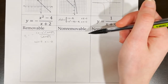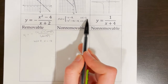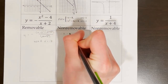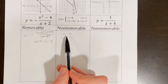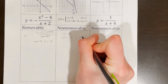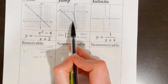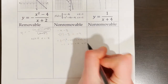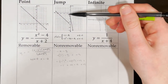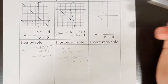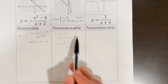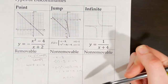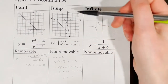For the jump discontinuity, which is non-removable, I'm going to analyze what each piece of the function equals at x equals negative 1. Plugging into the first piece, negative x minus 8 gives negative negative 1 minus 8, which is 1 minus 8, equaling negative 7. That makes sense — on the graph the left side is approaching negative 7. On the right side, plugging in negative 1 gives negative 1, which also matches the graph. Because we get two very different y values, we have a jump discontinuity at x equals negative 1, and jump discontinuities are non-removable.